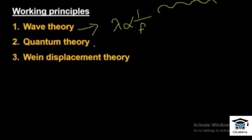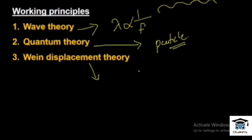The next theory is the quantum theory — electromagnetic energy travels in the form of particles called quanta. There is also Wien's displacement law: the wavelength of maximum emission is inversely proportional to the temperature of the source. These three principles — wave theory, quantum theory, and Wien's displacement law — are important to note.